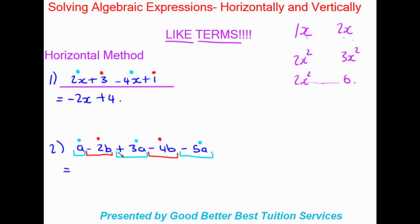Using that, we have a plus 3a minus 5a. a plus 3a gives me 4a, minus 5a gives me negative a. Then looking at the b terms: minus 2b minus 4b gives us negative 6b. So our final answer is negative a minus 6b.